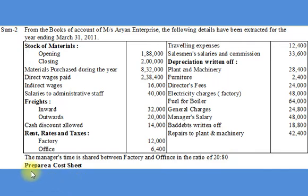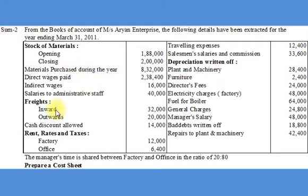From the above information, we are to prepare a cost sheet for Mrs. Aryan Enterprise. Let us understand the elements of cost first. We are given stock of materials — opening stock, closing stock, and purchase of materials — which will be considered in material consumed while preparing a cost statement. Freight inward will also be recorded under material consumed. Direct wages will be a part of prime cost.